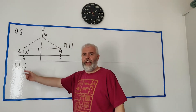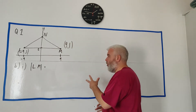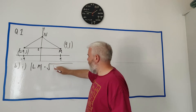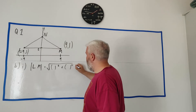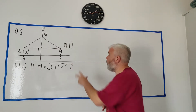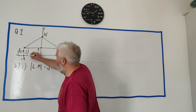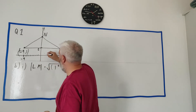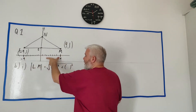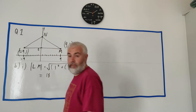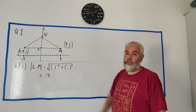Now they ask for the length of LM. You could use the distance formula — the square root of (x₂ - x₁)² + (y₂ - y₁)² — but you don't need to. You can just count: from -9 to 9 on the number line is 9 + 9 = 18. The length is equal to 18. You can just see it from the picture without using the formula.